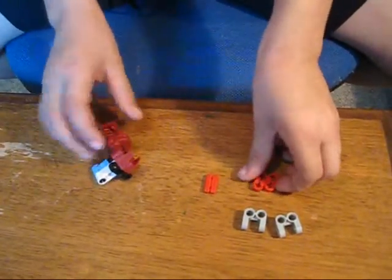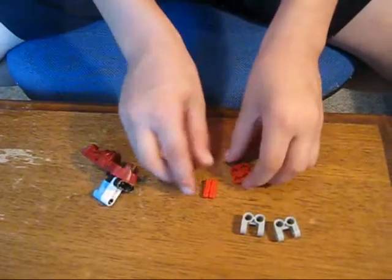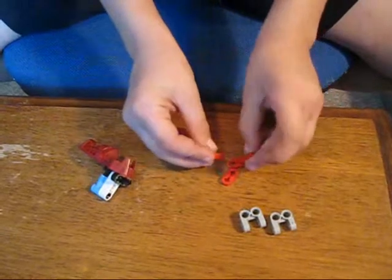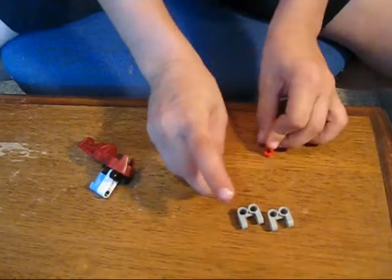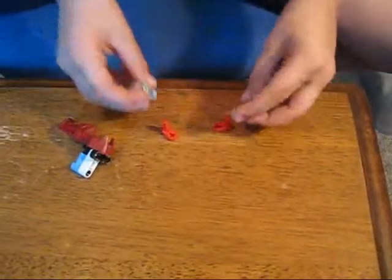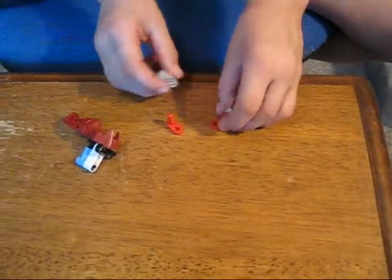Now we're going to make another bit for the first part. So, get these two pieces and put them in one of each of them. And then get one of these for each. Put one way.